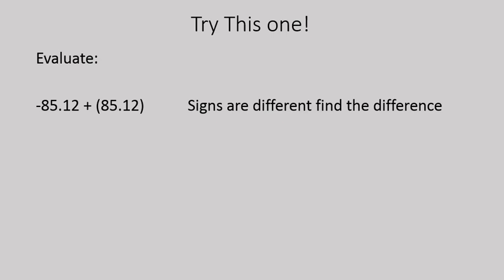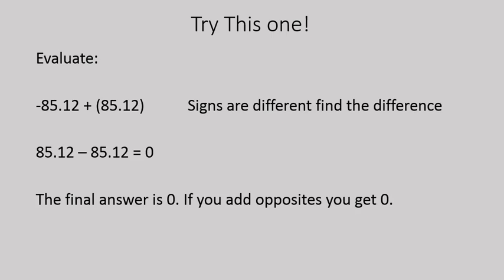Negative 85.12 plus positive 85.12. The signs are different in this case. The first number is negative. The second number is positive. So we're going to find the difference. In other words, we're going to subtract. 85.12 minus 85.12 gives you 0. This is a rule in adding. If two numbers are opposites and you add them together, you get 0. So in this case, our final answer is 0.